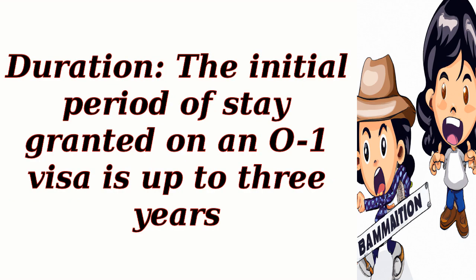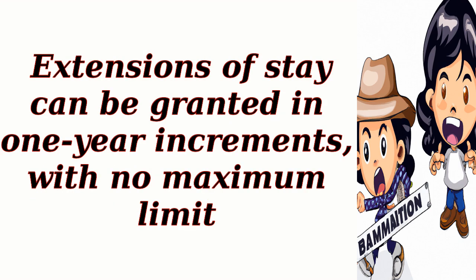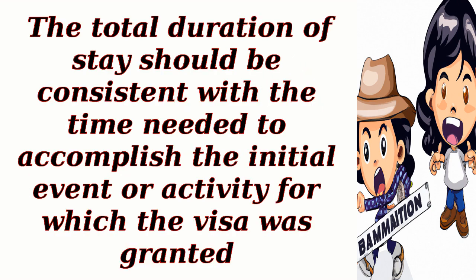Duration: The initial period of stay granted on an O1 visa is up to three years. Extensions of stay can be granted in one-year increments with no maximum limit. The total duration of stay should be consistent with the time needed to accomplish the initial event or activity for which the visa was granted.